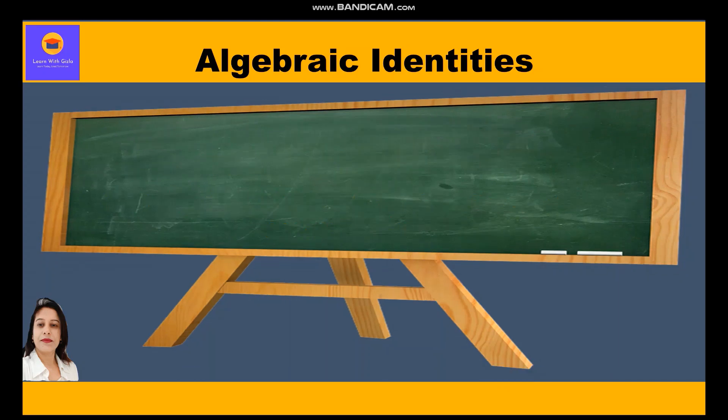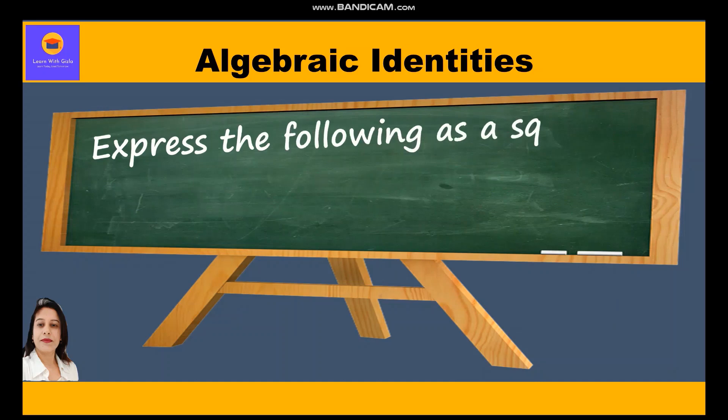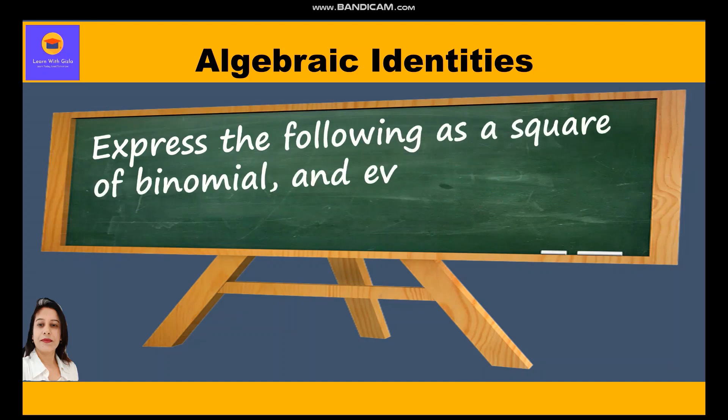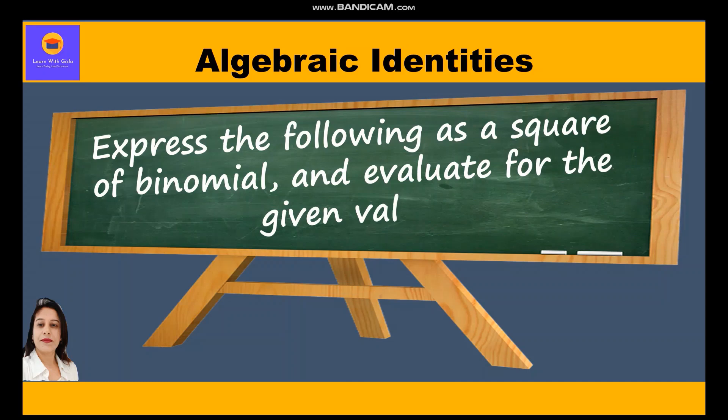Now we shall take up some application-based questions where we need to identify which identity to use and solve accordingly. Let's start with the first question: express the following as square of a binomial and evaluate for the given values.